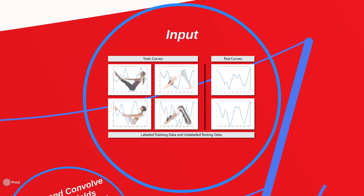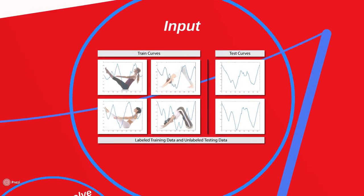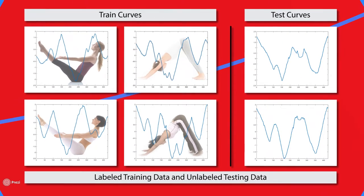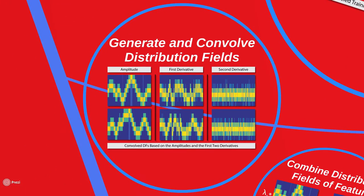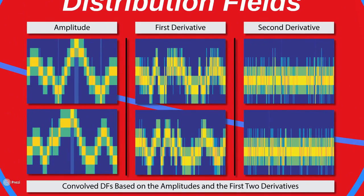We begin with labeled and unlabeled functional data, which become our training and testing data respectively. For each curve, we generate and convolve distribution fields based on their features. The features that we chose were amplitude, first derivative, and second derivative.